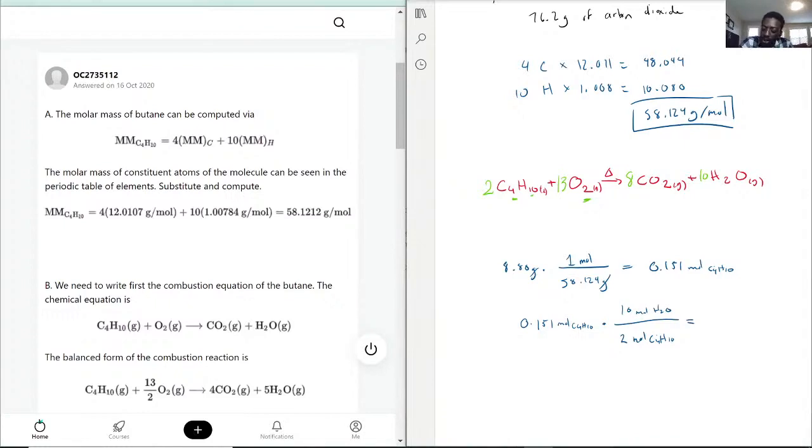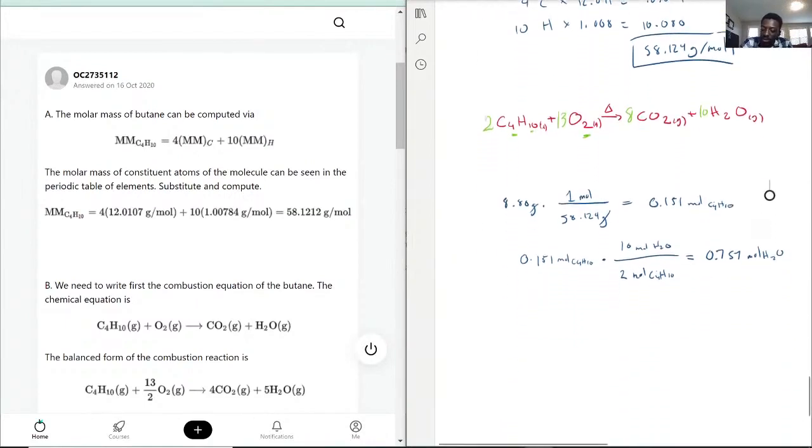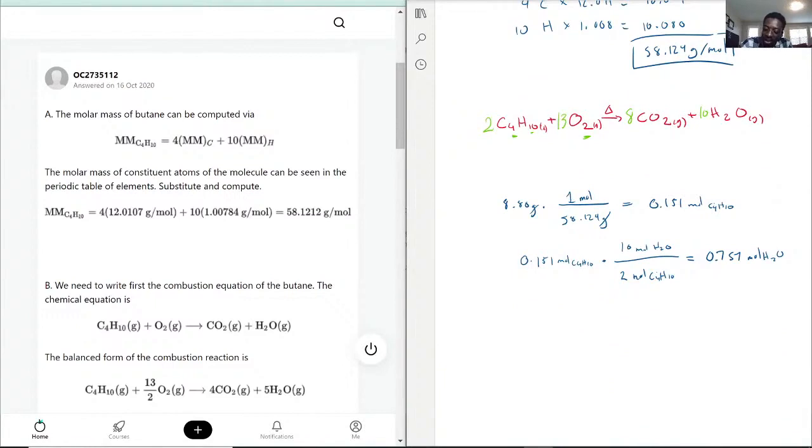And that gives you your moles. We have 0.757 mole of H2O but they're not asking for the moles, they're asking for the grams, which is why we need again the molar mass of water. Same way: H2O is 2 times 1.008 so that's 2.016 plus 15.999, together that's 18.015 grams per mole.